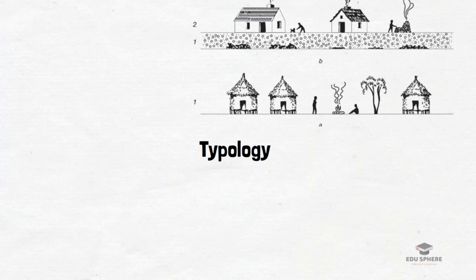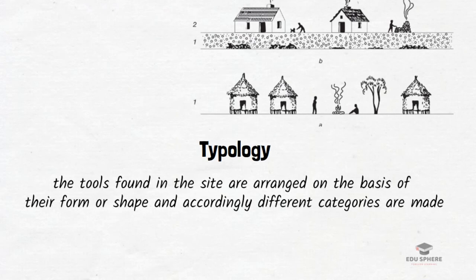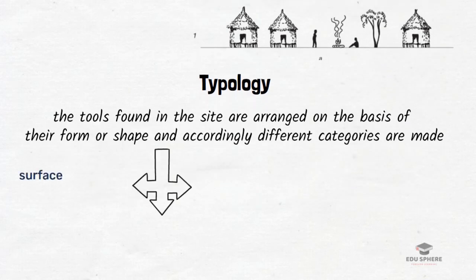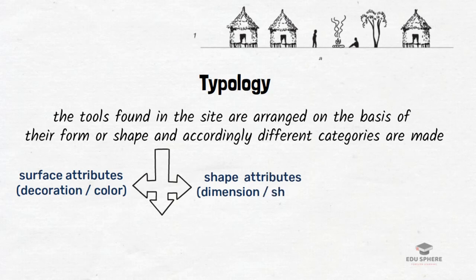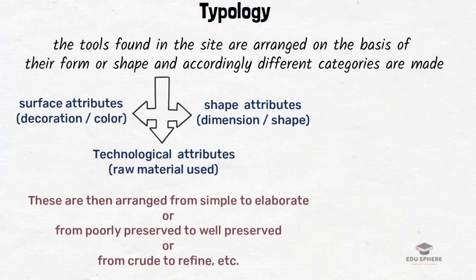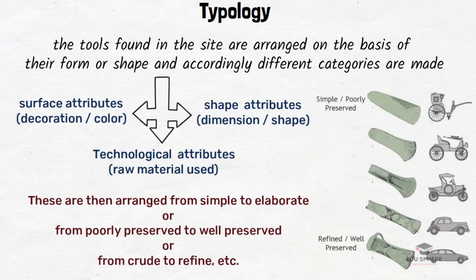The next method is Typology. In this relative dating method, the tools found in the site are arranged on the basis of their form or shape, and accordingly different categories are made. Classification is commonly done on the basis of three characteristics: surface attributes like decoration and color; shape attributes like dimension and shape; and technological attributes — what type of raw material was used. These are then arranged from simple to elaborate, or from poorly preserved to well preserved, or from crude to refined. A relative antiquity is derived based on the presumption that simple, poorly preserved and crude tools are earlier than the elaborate, well preserved and refined ones.